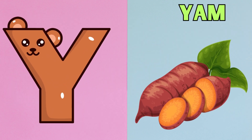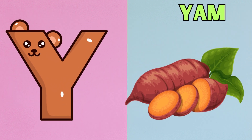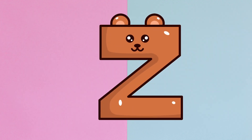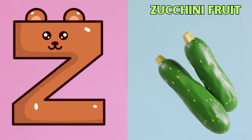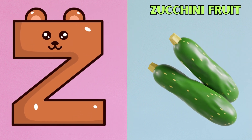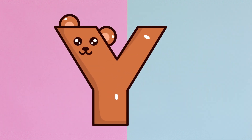Y is for Yam. Y, Y, Yam. Z is for Zucchini Fruit. Z, Z, Zucchini Fruit.